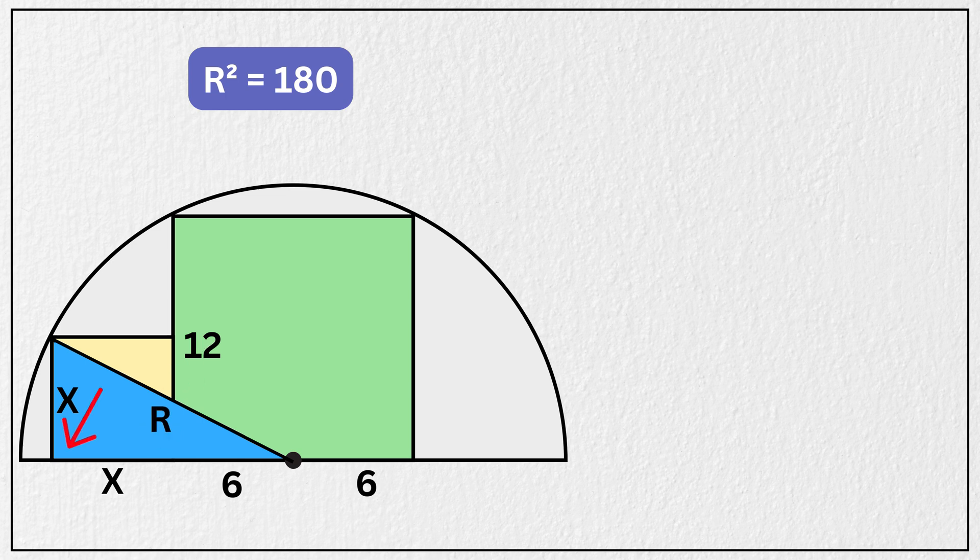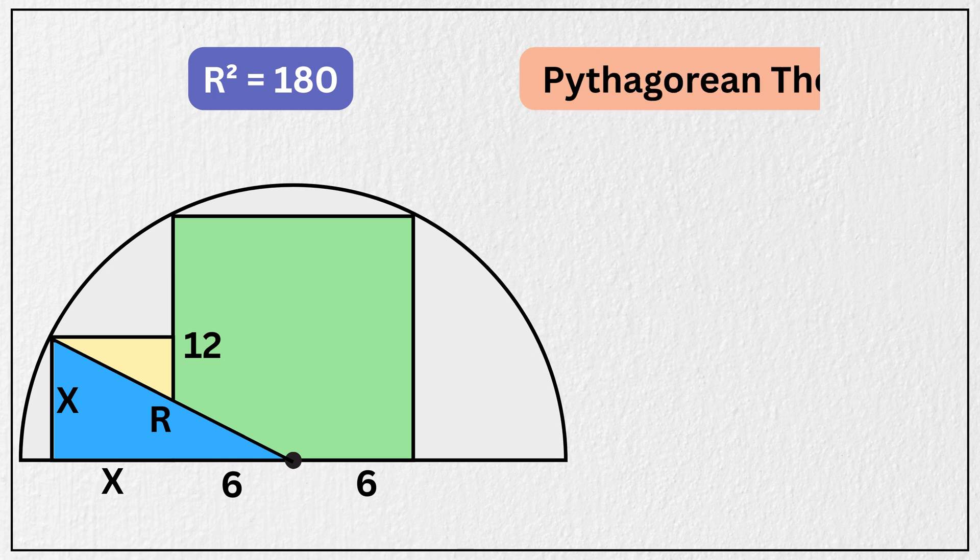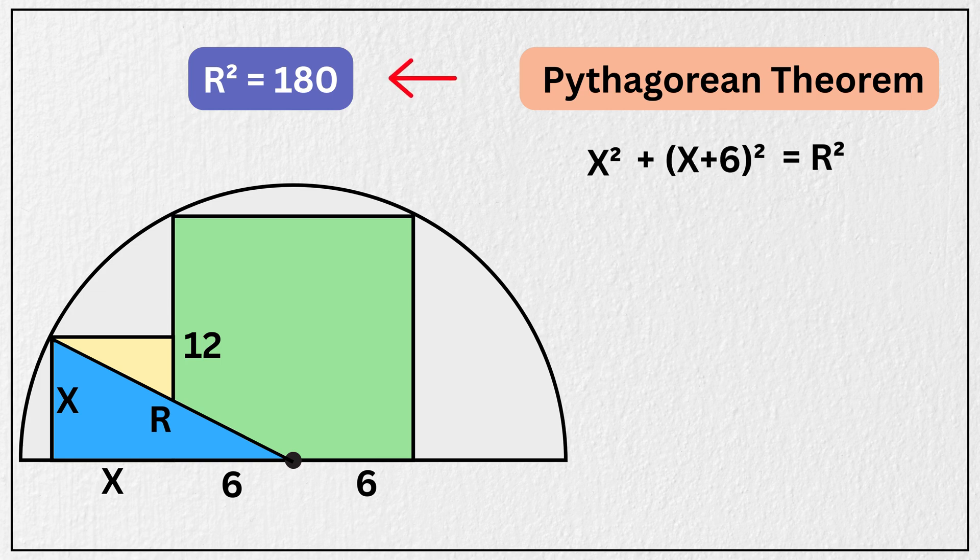Since this is also a right triangle, applying the Pythagorean theorem one more time, we have x squared plus the square of the quantity x plus 6 equals r squared. We already found that r squared equals 180. So substituting this we get x squared plus the square of x plus 6 equals 180.